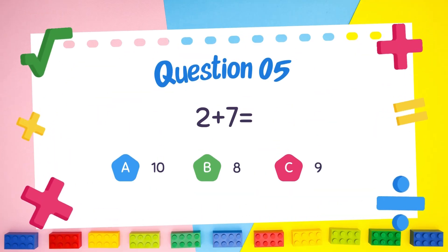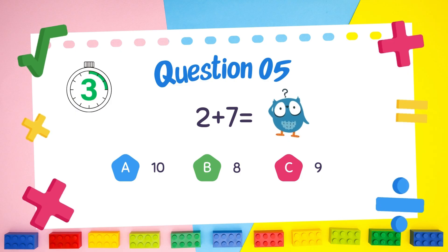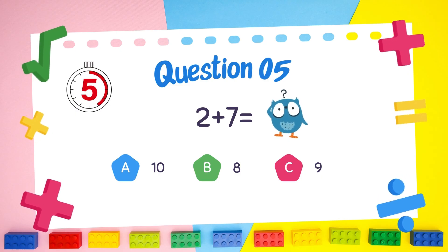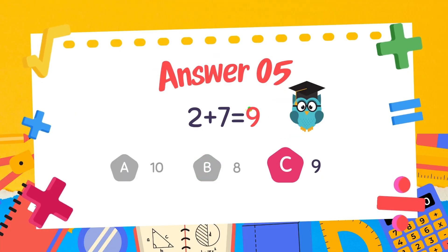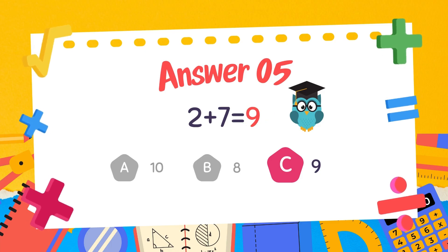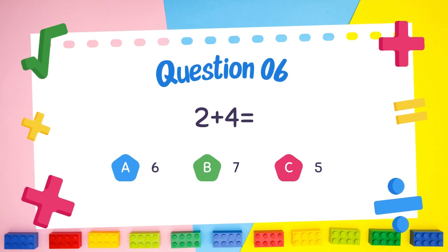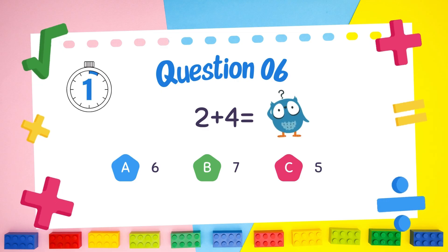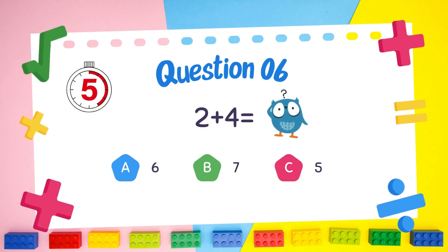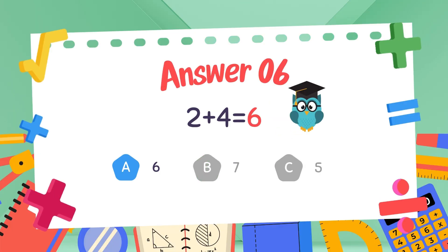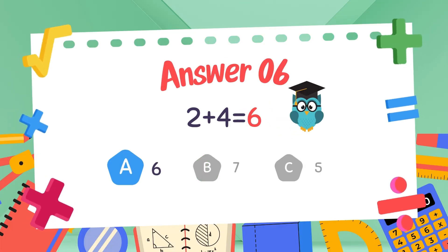What is 2 plus 7? The answer is 9. What is 2 plus 4? The answer is 6.